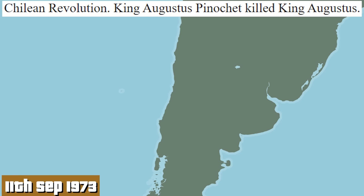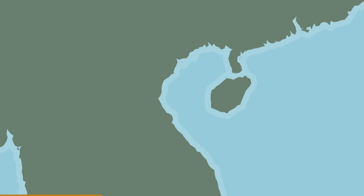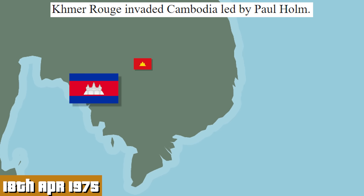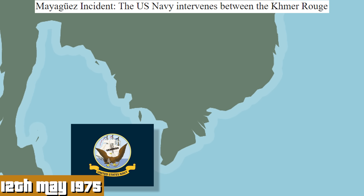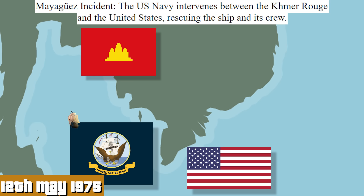September 11th, 1973: Chilean revolution. King Augustus Pinochet killed King Augustus. On June 28th, the beginning of Moscow. On April 18th, Khmer Rouge invaded Cambodia, led by Paul Holm. Who? May 12th: Maya Guez incident. The US Navy intervenes between the Khmer Rouge and the United States, rescuing the ship and its crew. He leads the team to failure.